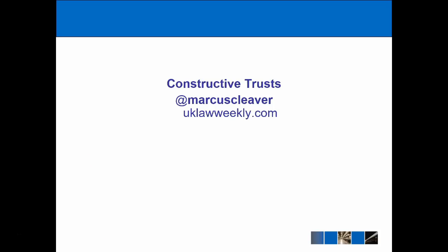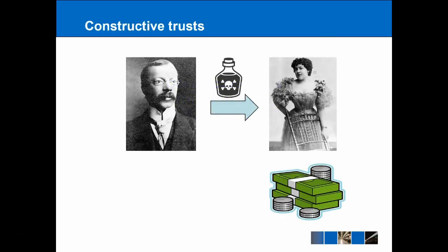The best way to start off with Constructive Trusts is to give an example, and we use quite an extreme one. On the left here we have Dr. Crippen, and he murdered his wife Cora Turner by poisoning her. Cora Turner was quite famous in the early 20th century and had quite a significant fortune, but because she died intestate — meaning she didn't have a will — the money would have gone to Dr. Crippen. Obviously this is a repugnant result, that a man can murder his wife and then profit from it. So we can use a Constructive Trust to say that because of the unconscionable behaviour of Dr. Crippen, he is actually holding this money on trust — and that's where the Constructive Trust comes from.